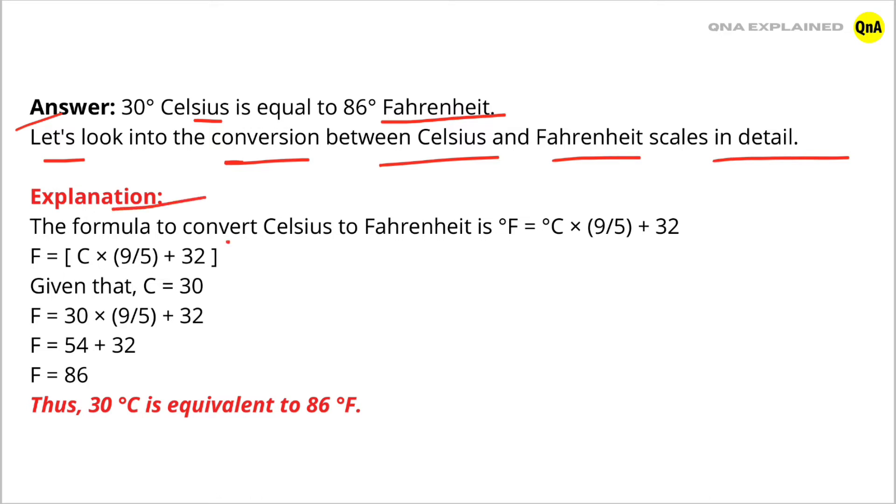The formula to convert Celsius to Fahrenheit is F = C × (9/5) + 32. Given that C = 30,